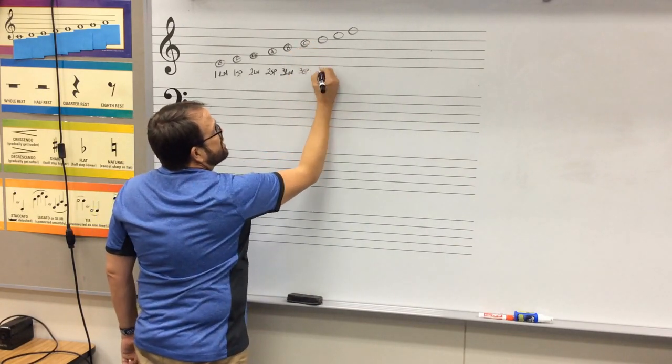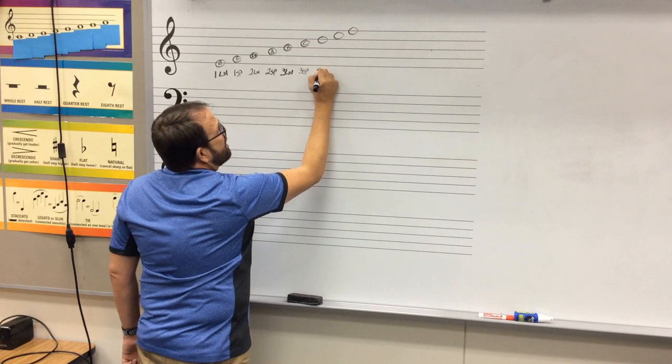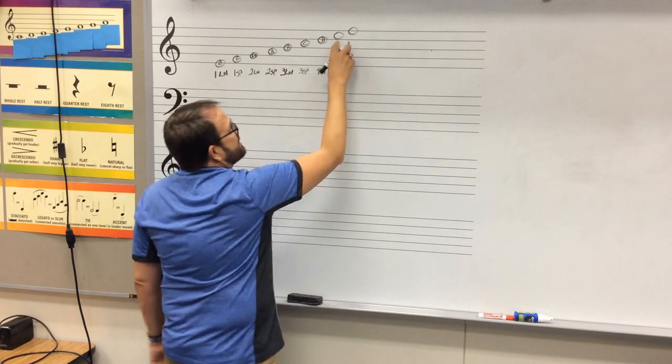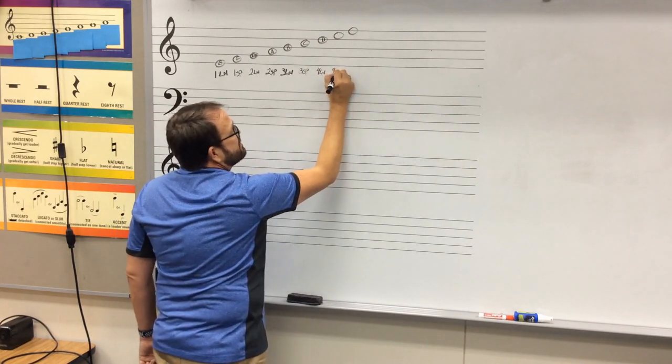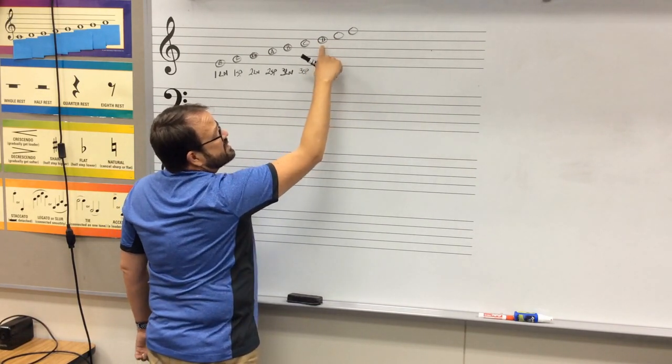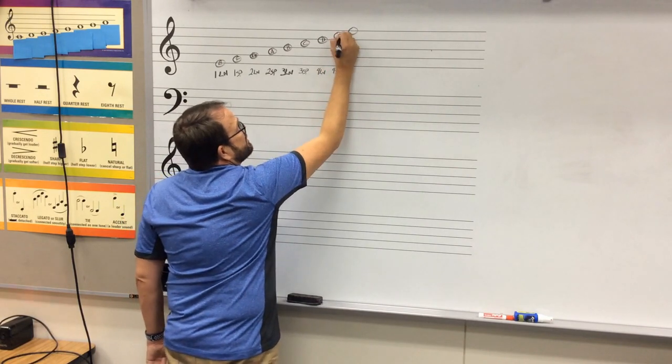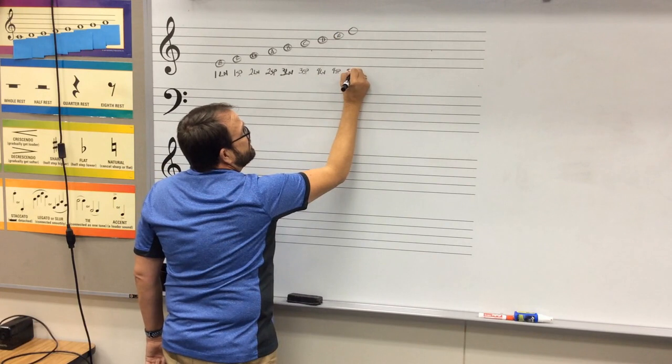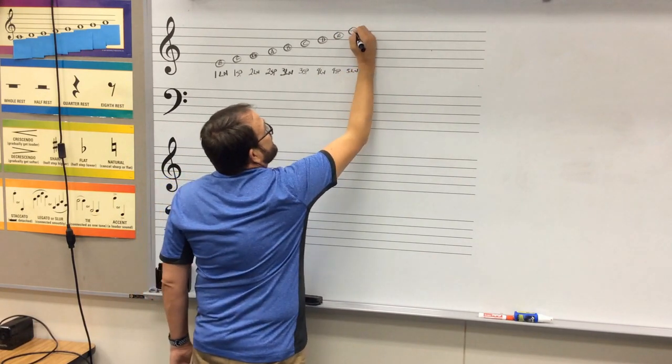The next one is third space, and it would be after B is C. The next one is fourth line, and that would be a D. The next one is fourth space, after D is E. And after fourth space is fifth line, and that would be an F.